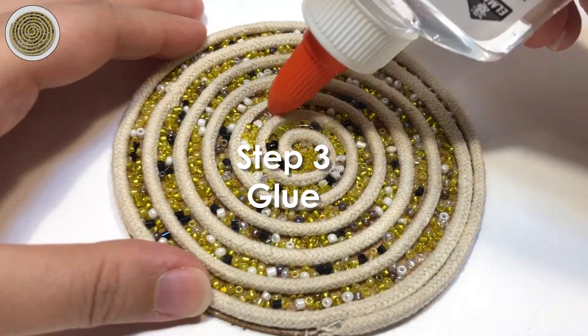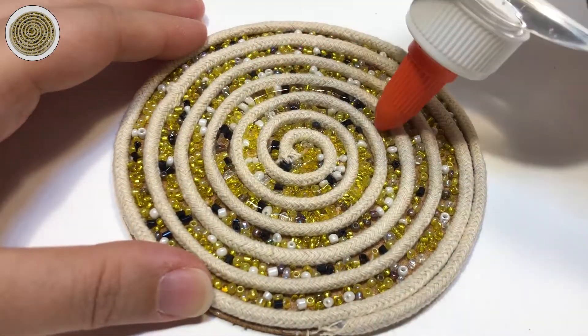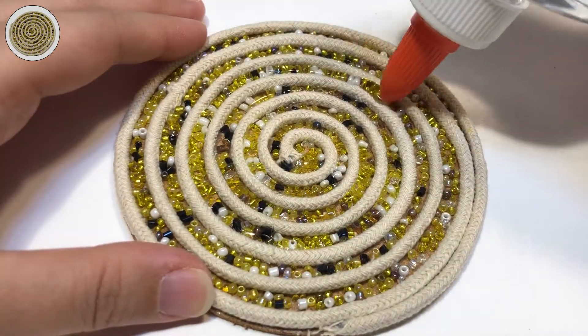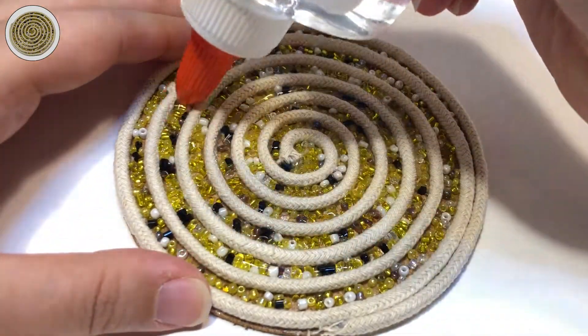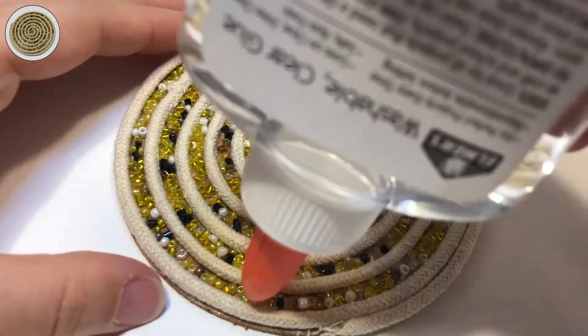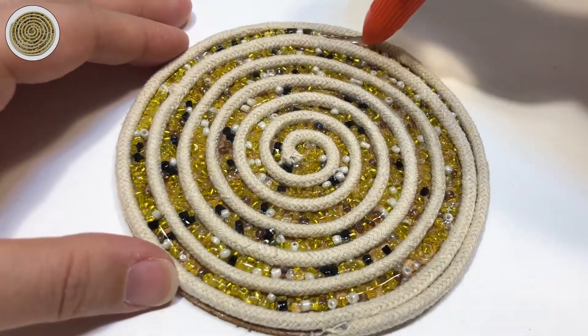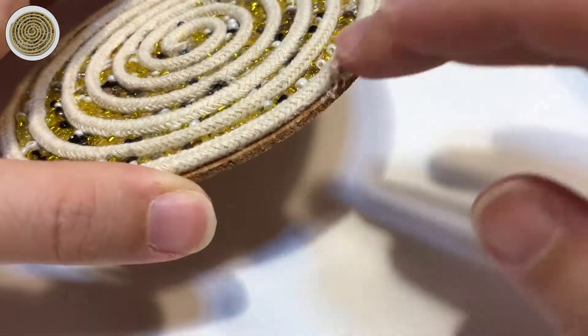Step three: glue. Finally, take some clear drying glue and fill in the beads between the swirls. This is going to set them in place so that they don't fall out. You can even add some glue to the edge of the coil to keep it from fraying.